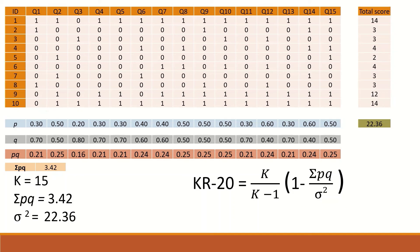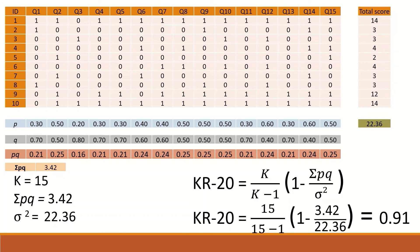With all values ready, they are inserted into the KR20 equation. K equals 15, so KR20 equals 15 divided by (15 minus 1), multiplied by 1 minus the sum of P times Q (3.42) divided by the variance (22.36). The resulting KR20 value is 0.91, which means the exam is 91% reliable — indicating excellent reliability.